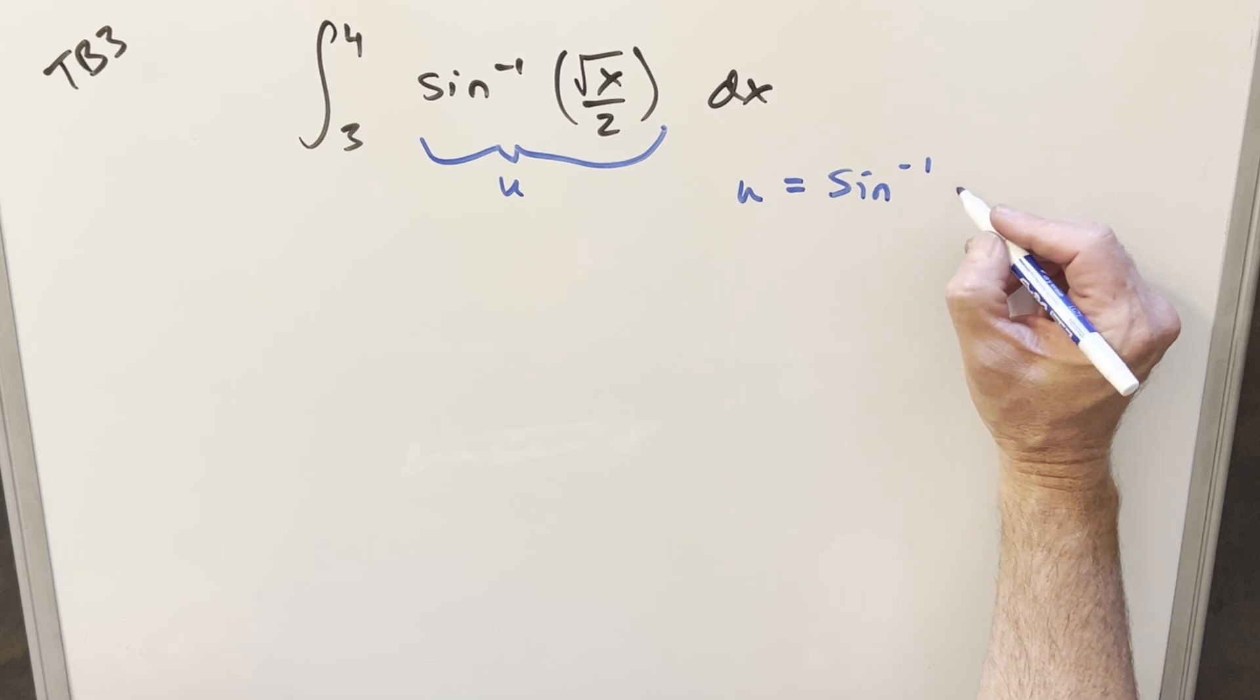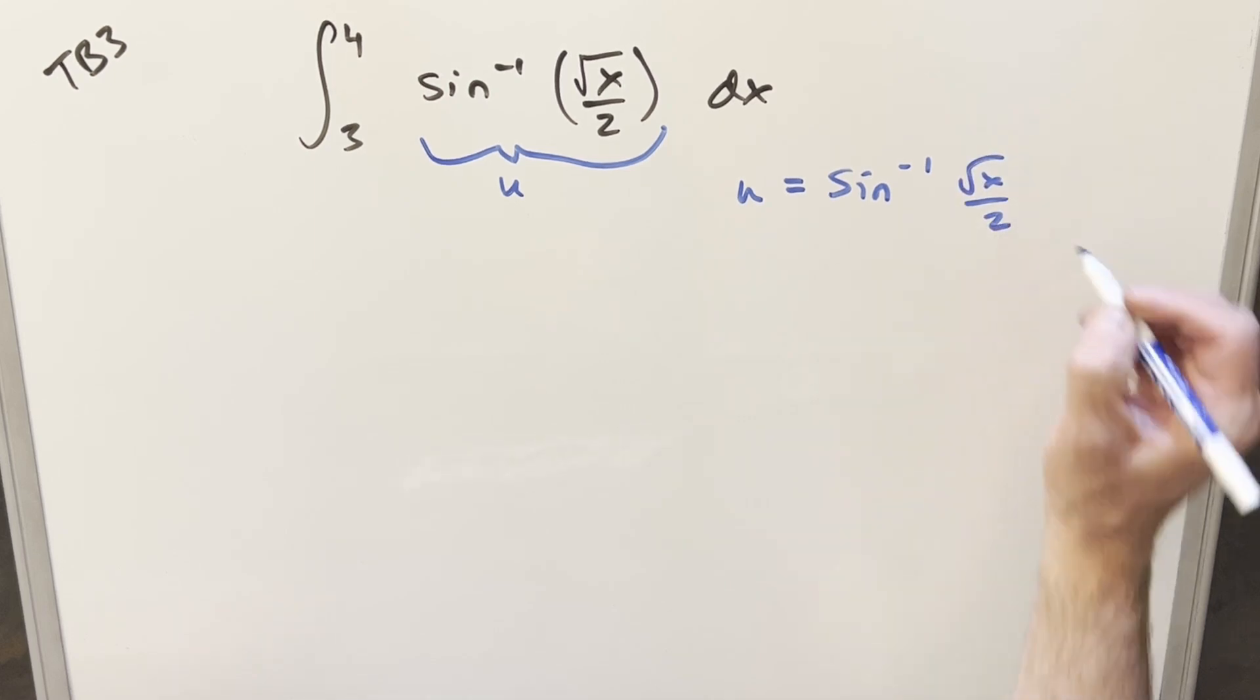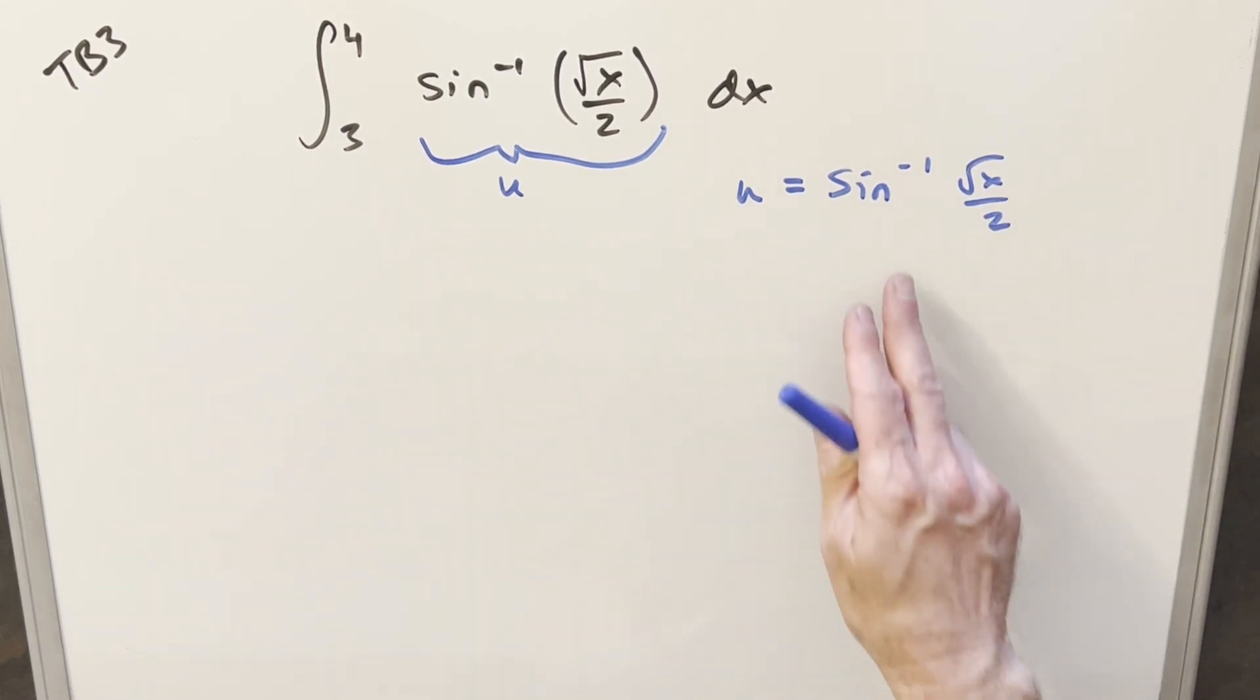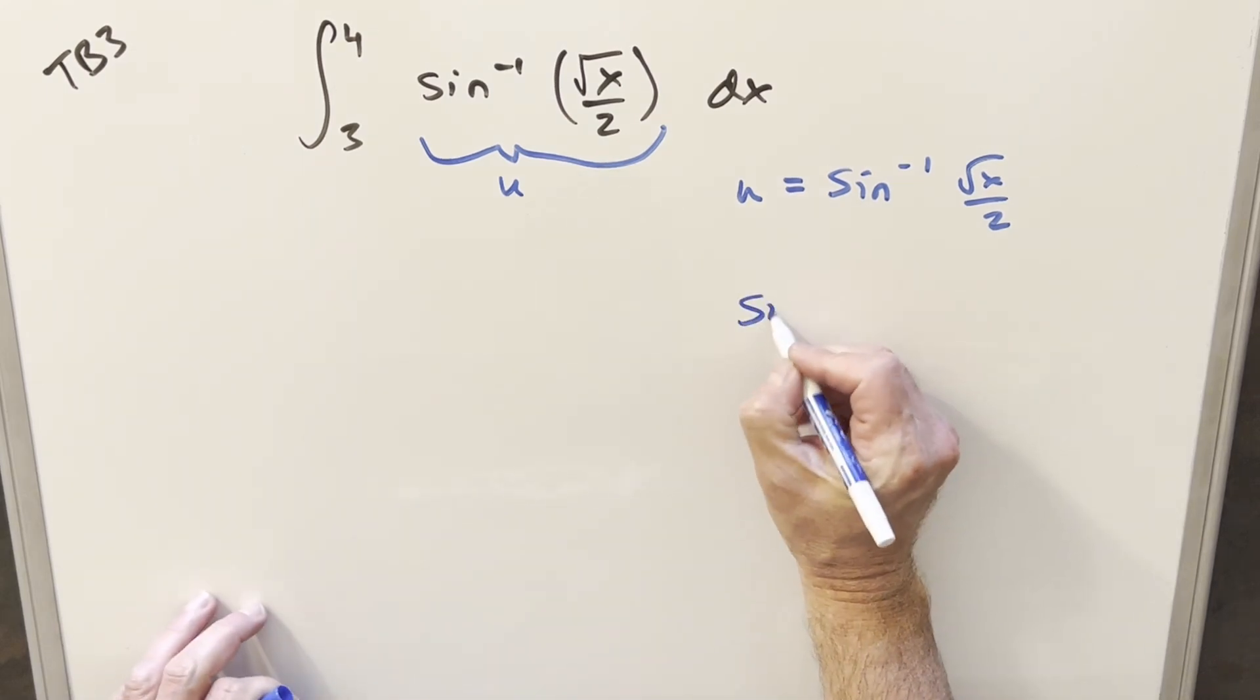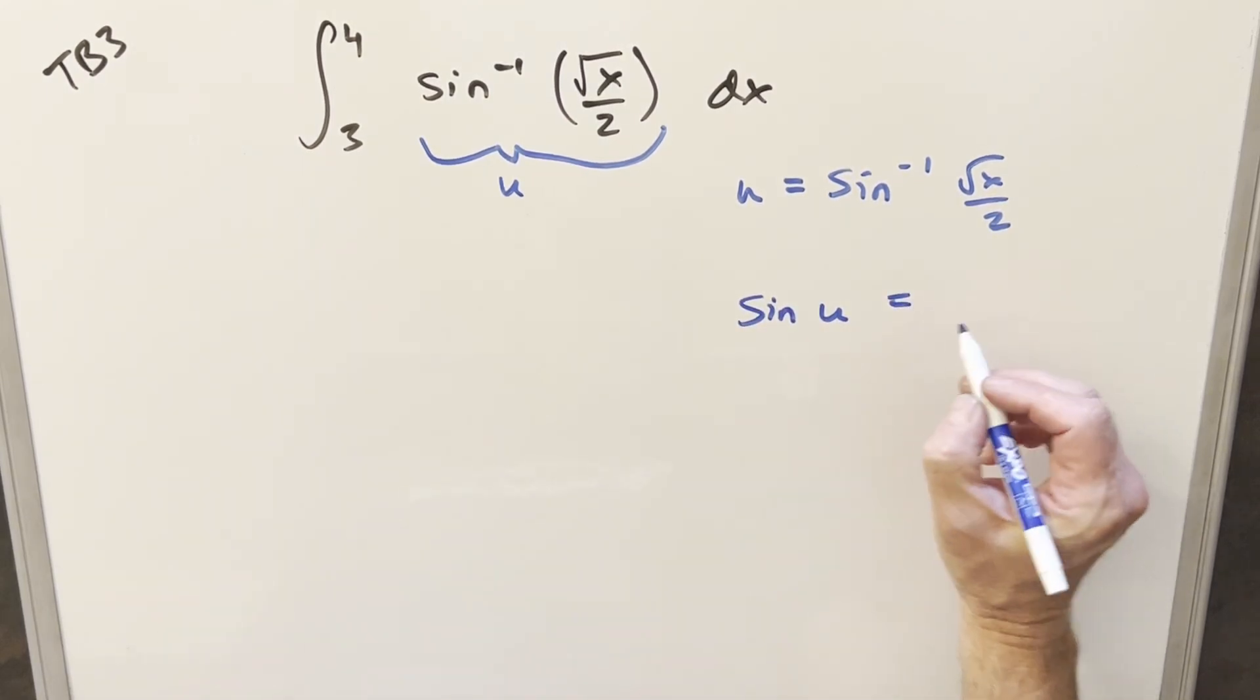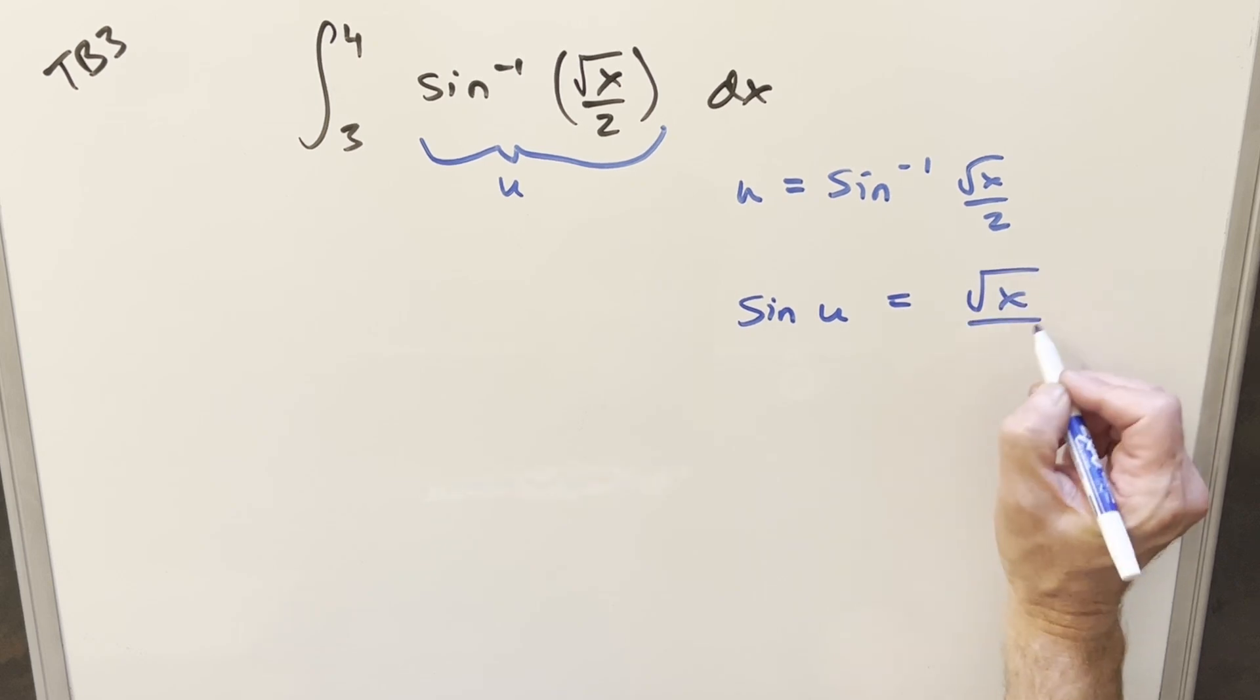So we'll do u equal to arc sine of square root of x over two. I could take a derivative, but I think what I actually want to do is rearrange this first. Taking sine on both sides, we end up with sine of u is going to be equal to square root of x over two.